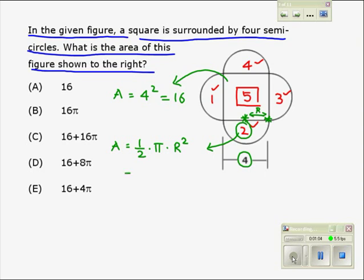Therefore, we get the area of the semicircle as one half times pi times two squared. And upon cancellation, we get two pi.